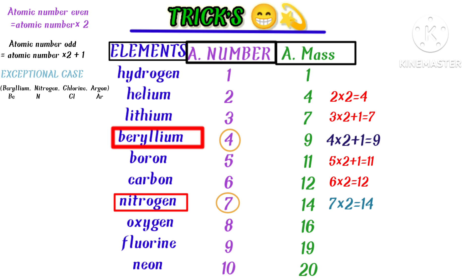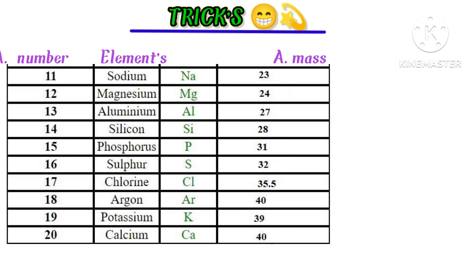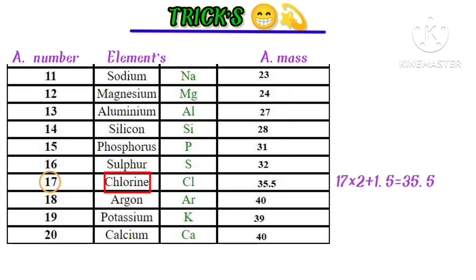Now let's find the atomic mass of chlorine. The atomic number of chlorine is 17, which is odd. For chlorine, instead of adding 1, we add 1.5. So: 17 × 2 + 1.5 = 35.5. The atomic mass of chlorine is 35.5.